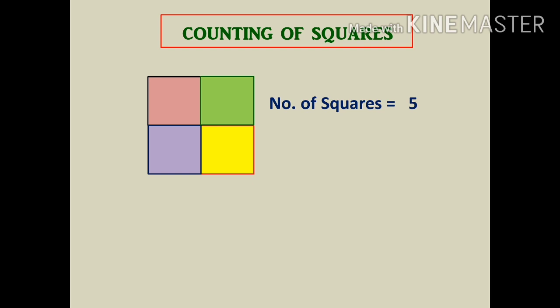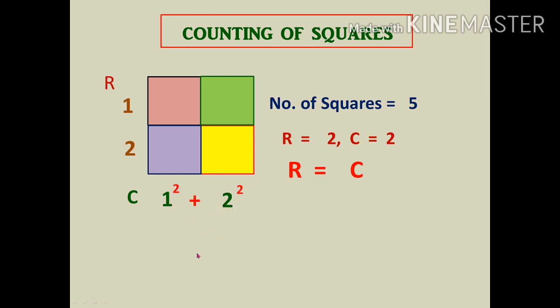Since it is a very small image we can easily solve by counting, but if we know the trick it will be really helpful for a very big image. The trick is to first count the number of rows and columns. In this image we have 2 rows and 2 columns. Since rows and columns are equal, write the numbers in a series, square those numbers, and add them. So 1² + 2² = 1 + 4 = 5. The total number of squares is 5.